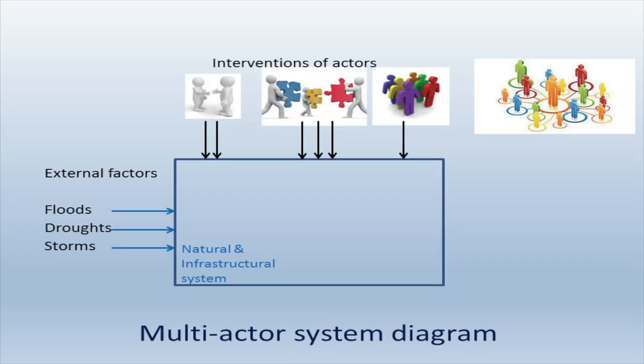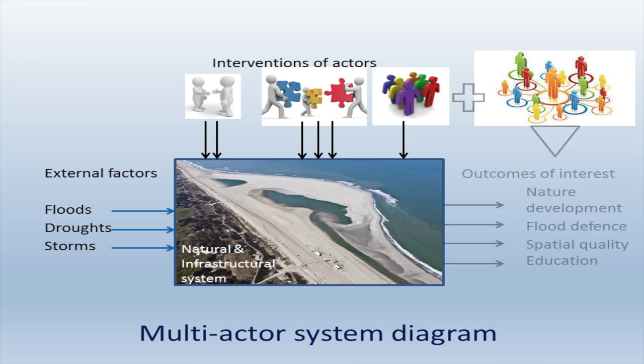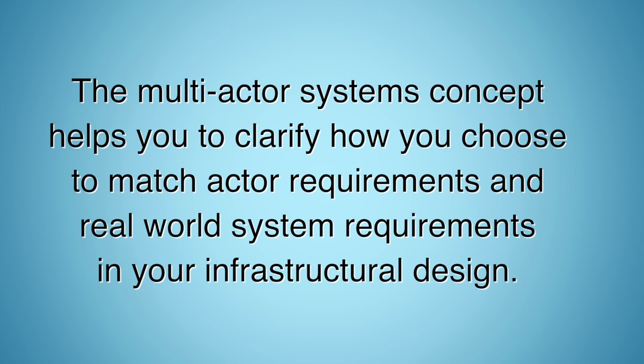Third, the range of interventions and who's responsible for them or who can influence them — which actors can do what. Fourth, the connections between effects within the natural and the infrastructural system; the engineer's understanding of how processes work, which can be done with empirical relationships or with advanced numerical modelling. Fifth and finally, the outcomes of these effects will be clear and who's likely to benefit or not from the design. In summary, the multi-actor systems concept helps you to clarify how you choose to match actor requirements and real-world system requirements in your design.